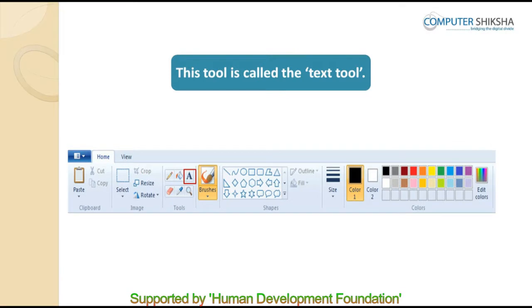Now look at the picture shown. Within the toolbox, you will find a tool marked as A. This tool is called the text tool, and with its help we can type on our paint sheet. You first have to select this tool, then in your paint sheet take the cursor to the place where you want to write something and click the left button. Whatever you type will appear in that box. Be careful that while you are typing, this box should not get erased — if you click outside the box, it will disappear and you will not be able to make any changes to what you have written.